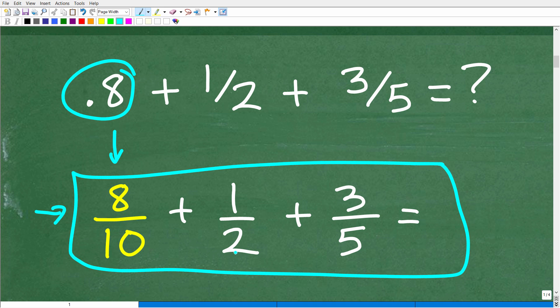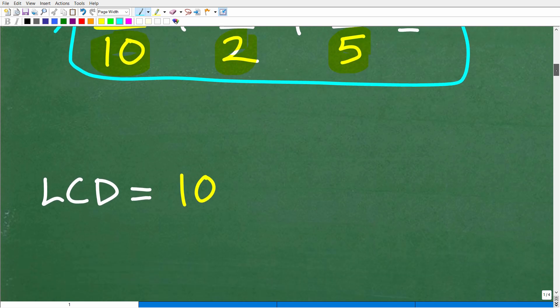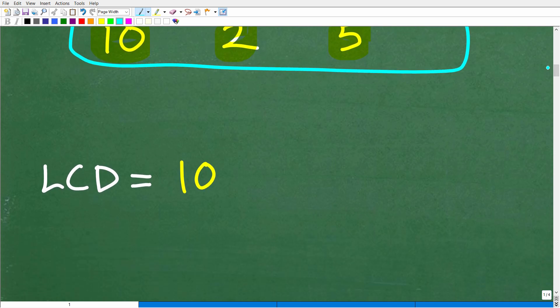8 tenths plus 1 half plus 3 fifths. So we have a simple fraction addition problem. Now, remember, we can't add fractions unless we have the same denominator. So we have 10 here, 2 here, 5 here. What is the lowest common denominator? Because we're going to need that. And hopefully all of you are saying, well, that's easy, Mr. YouTube Math Man. The LCD is 10. And you would be absolutely correct.